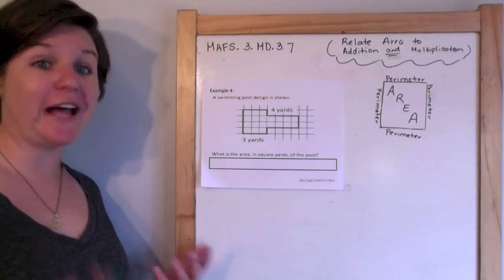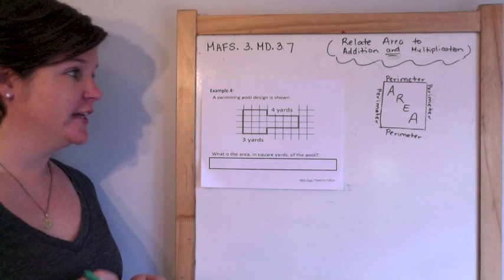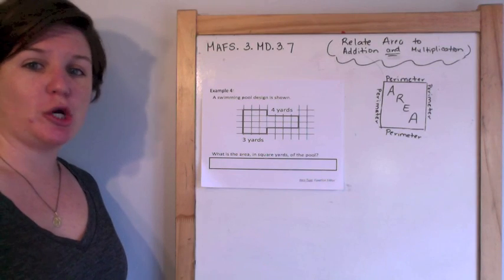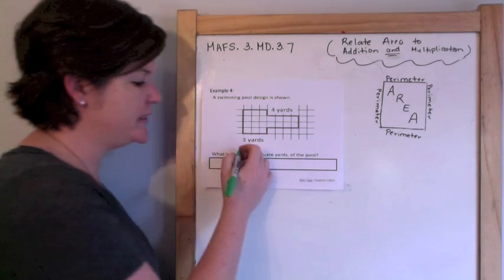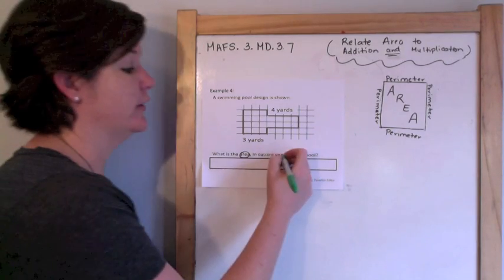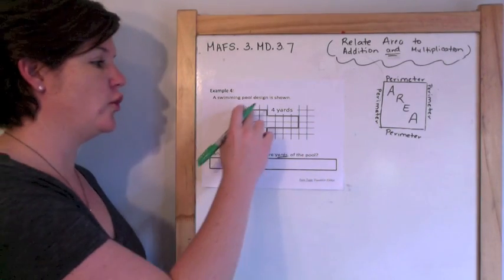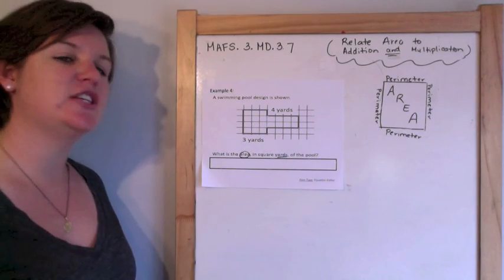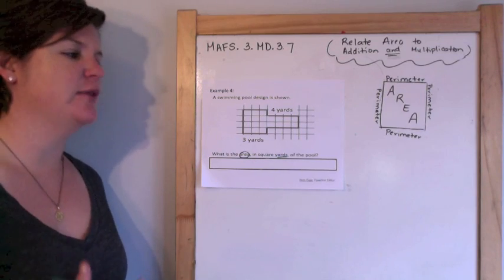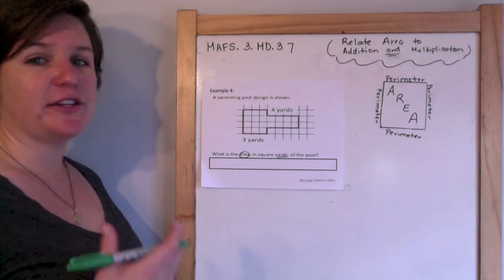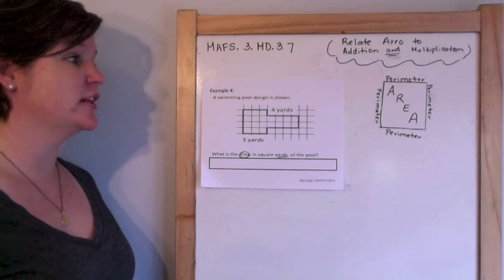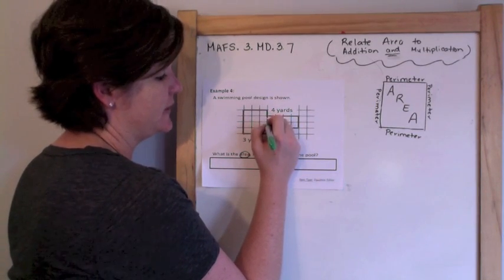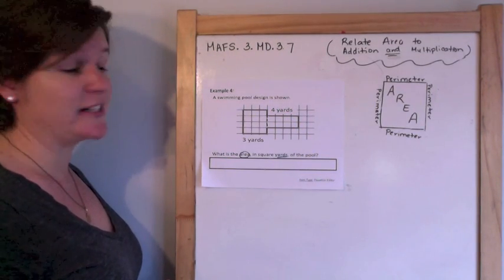Here's example 4 and our last one for today — I only have 4 examples to meet what the item test specs require. A swimming pool design is shown. What is the area in square yards of the pool? It's the whole bolded region. I want to relate the addition and multiplication aspect of this standard rather than just counting squares.